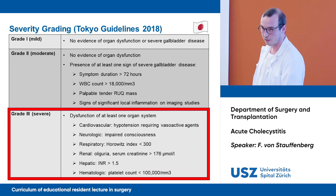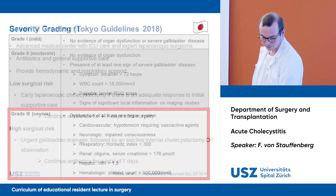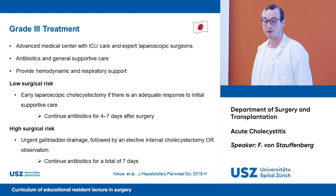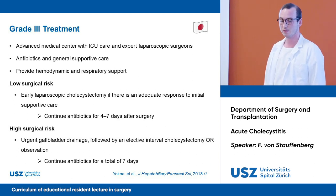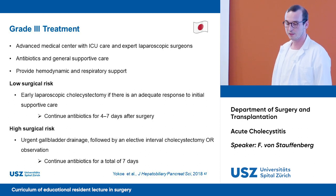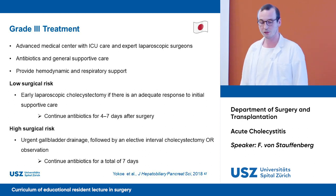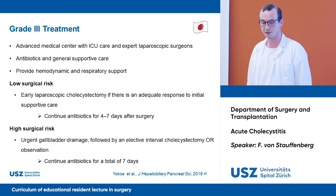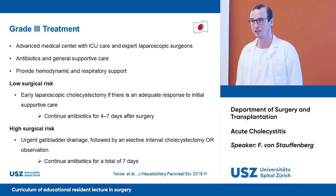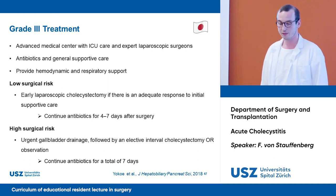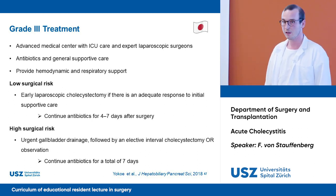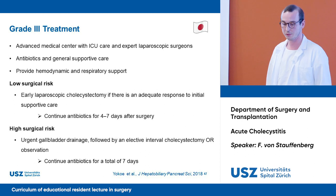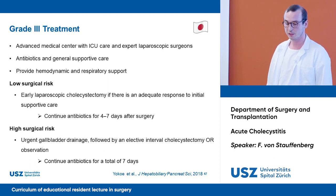In Grade 3, with dysfunction of at least one organ system, treatment should be in an advanced medical center with ICU care and expert laparoscopic surgeons. Antibiotics, general supportive care, and hemodynamic and respiratory support should be established preoperatively. In low surgical risk patients responding to initial therapy, perform early laparoscopic cholecystectomy and continue antibiotics for four to seven days after surgery. In high surgical risk patients, perform urgent gallbladder drainage followed by elective interval cholecystectomy or observation if the patient remains too high risk; continue antibiotics for a total of seven days.